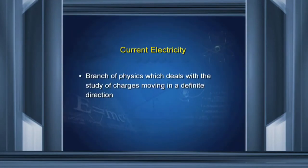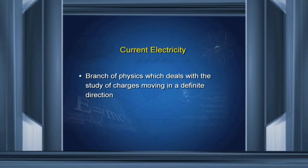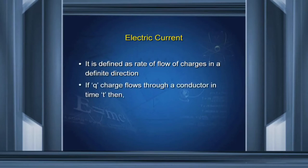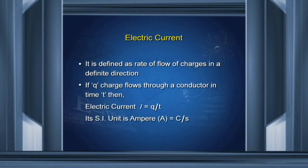Current electricity is the branch of physics which deals with the study of charges moving in a definite direction. Electric current is defined as the rate of flow of charges in a definite direction. If Q charges flow through a conductor in time t, then electric current i equals Q upon t. Its SI unit is ampere, which is coulomb per second.